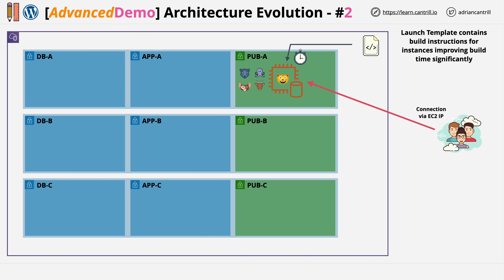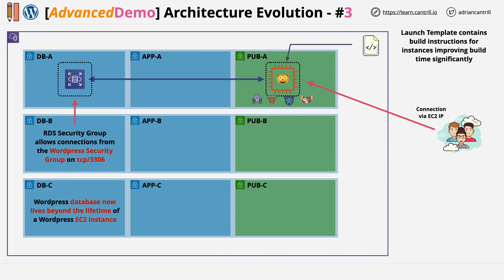Welcome back. In stage three of this demo series, you're going to change the single server architecture on screen and move towards something more scalable. You're going to migrate the database from the EC2 instance into a separate RDS instance, so each can scale independently. It also means the data in the database lives past the lifecycle of the EC2 instance, which is required for later stages where we want to scale in and out based on load.